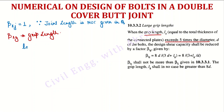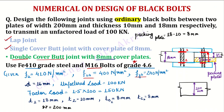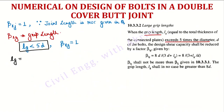Next, β_lg depends on the grip length. The grip length Lg = cover plate + main plate + cover plate = 8 + 18 + 8 = 34 mm. Now 5d = 5 × 16 = 80 mm. Since Lg (34 mm) is less than 5d (80 mm), the condition is satisfied, and therefore β_lg = 1.